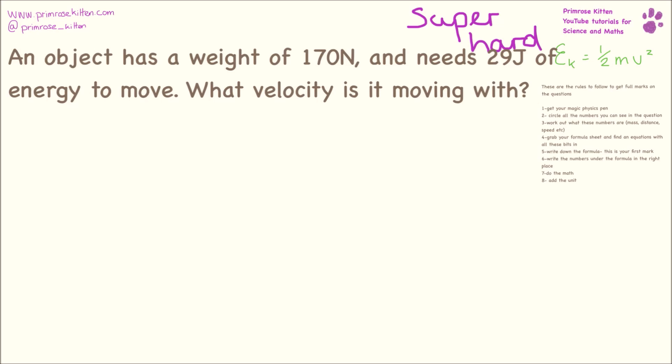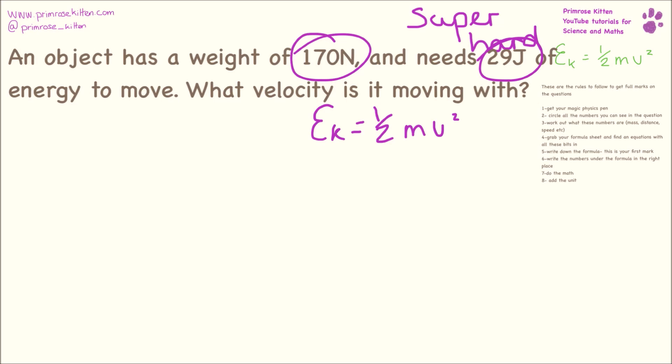Super hard questions are aimed at top students. An object has a weight of 170 newtons and needs 29 joules of energy to move — what velocity is it moving with? This requires combining two equations. We know one is the kinetic energy equation, but we have weight instead of mass, so we need an equation to turn weight into mass: weight equals mass times gravity.